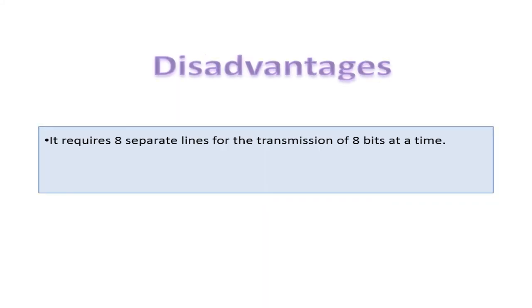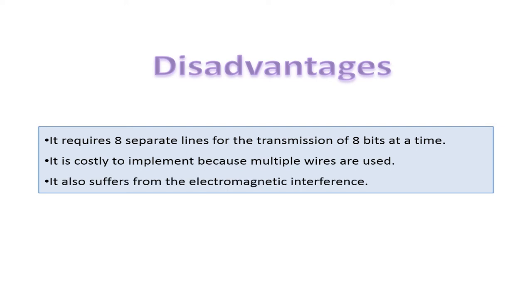Now the disadvantages: it requires 8 separate lines for the transmission of 8 bits at a time. It is costly to implement because multiple wires are used. It also suffers from electromagnetic interference.